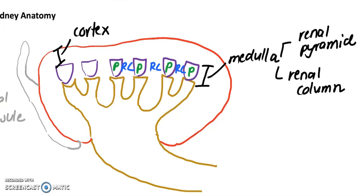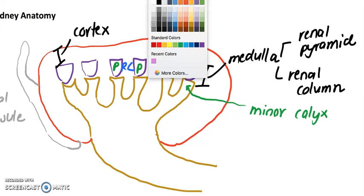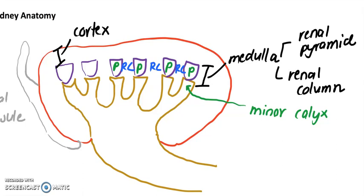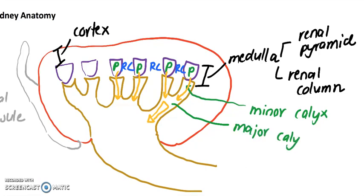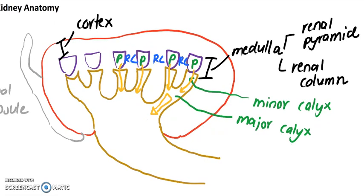Right at the base of the pyramid, this tissue is called a minor calyx. This is where the urine produced is going to travel down. Urine is produced towards the bottom of the pyramid, flows down through the minor calyces, and converges into the next region called a major calyx. So we have minor calyces feeding into major calyces, with urine flowing along the way.